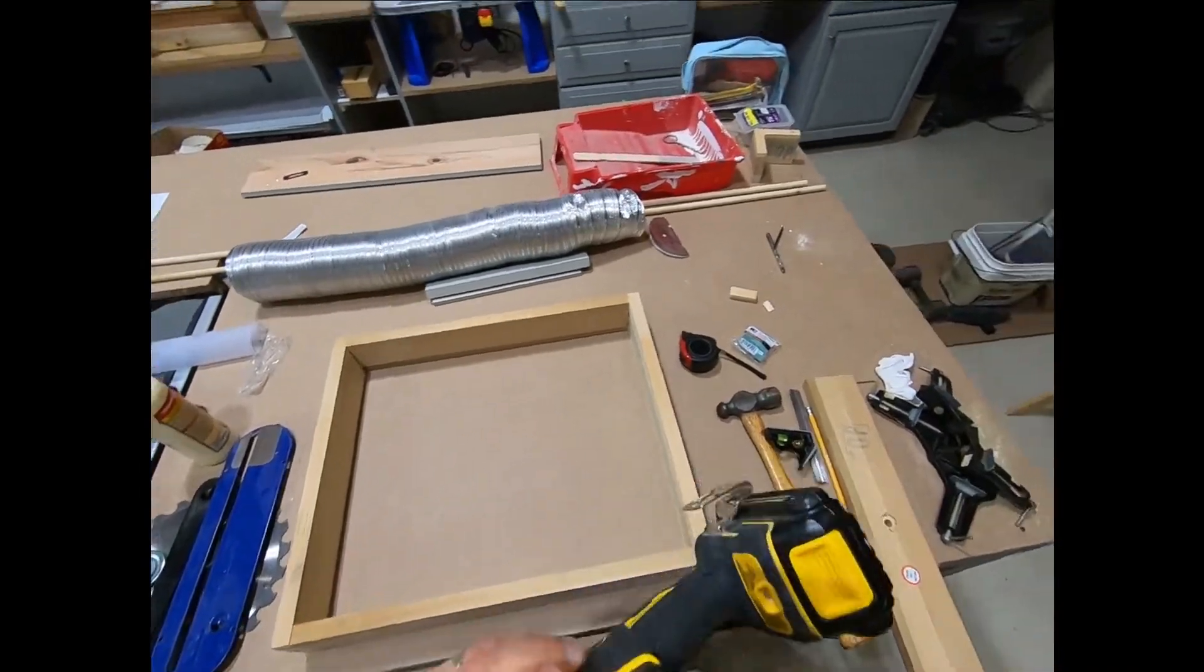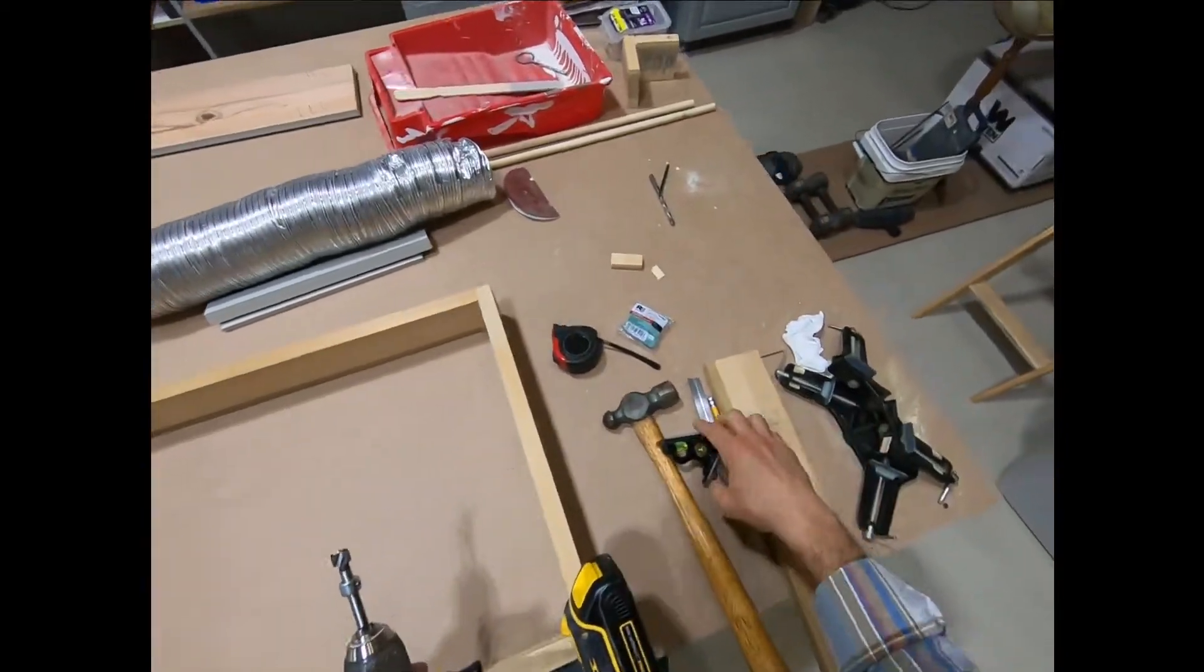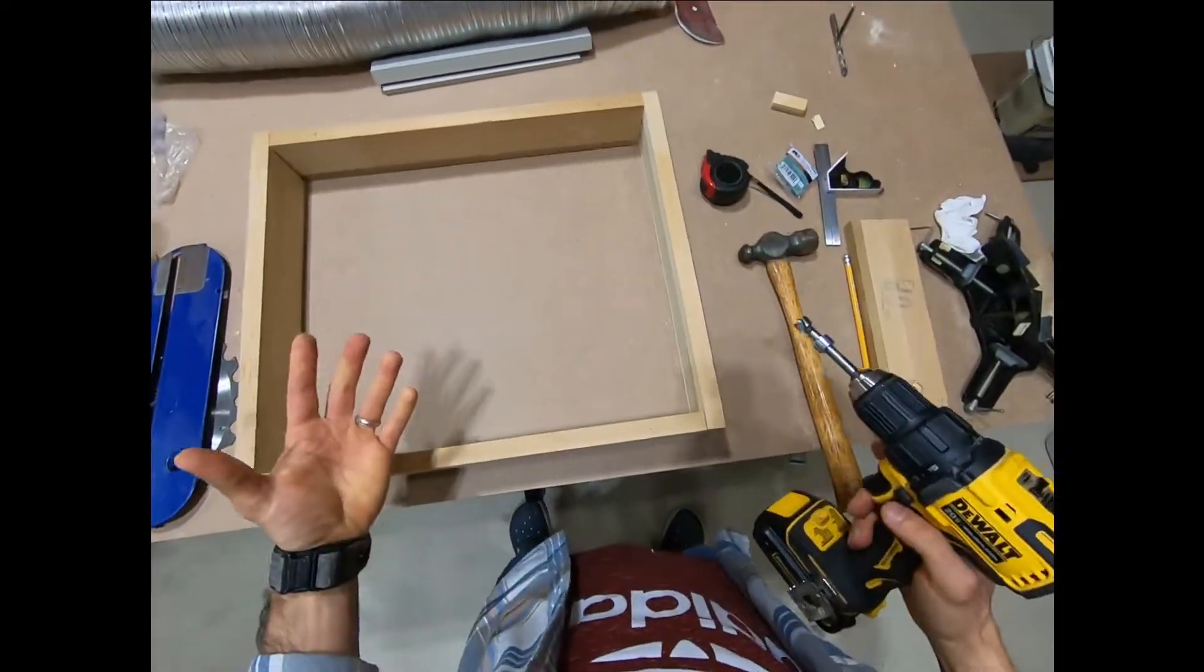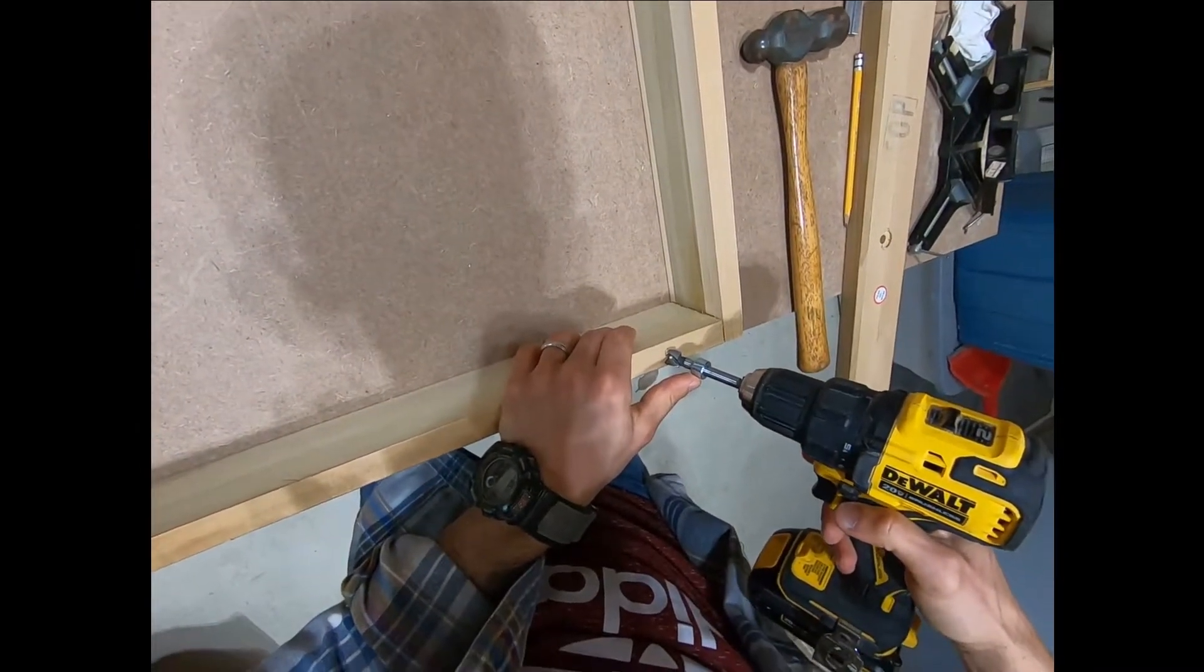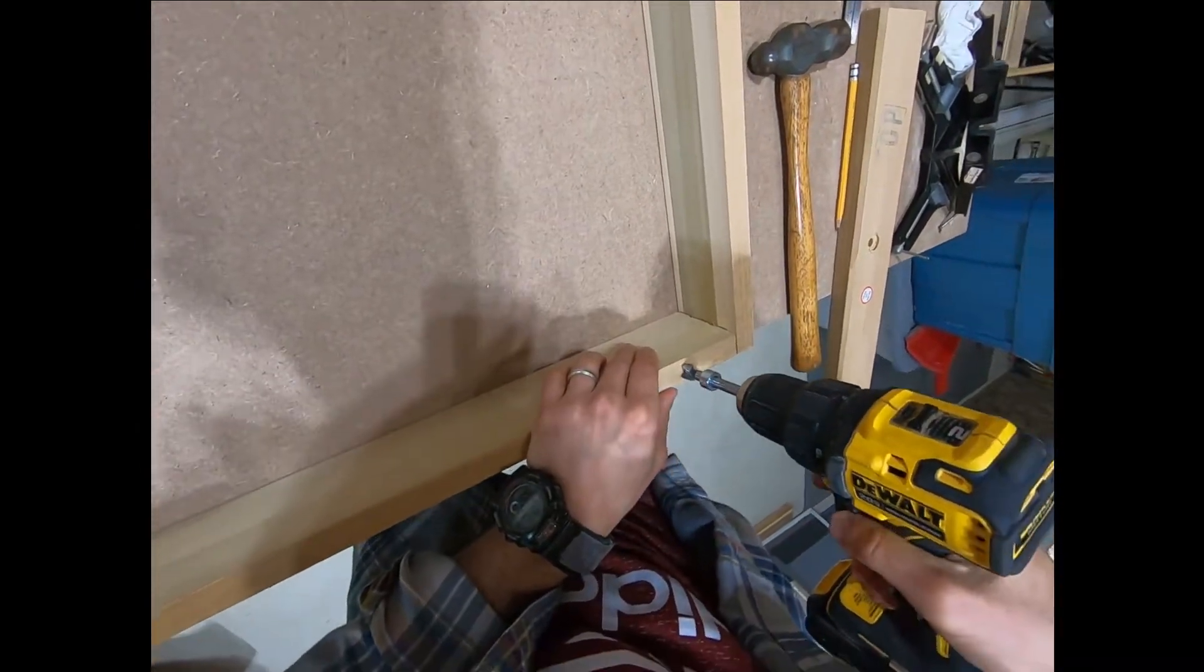This is what a fastener bit looks like. I did use my stopper at an inch. Now it would be nice to have a drill press. I don't, so just make sure you are going to try to do this as straight as humanly possible.